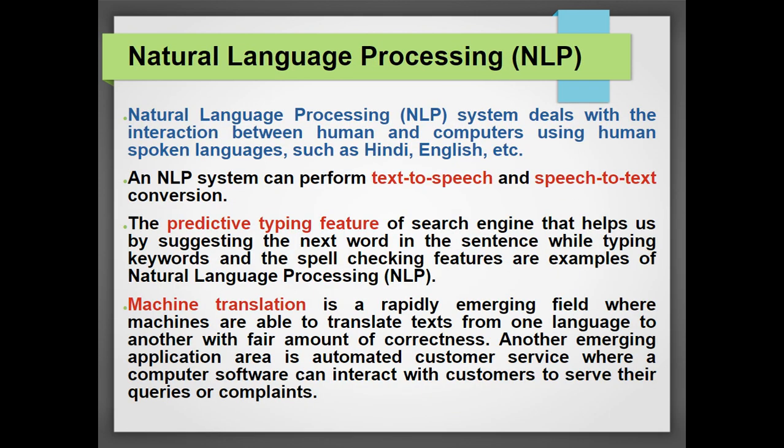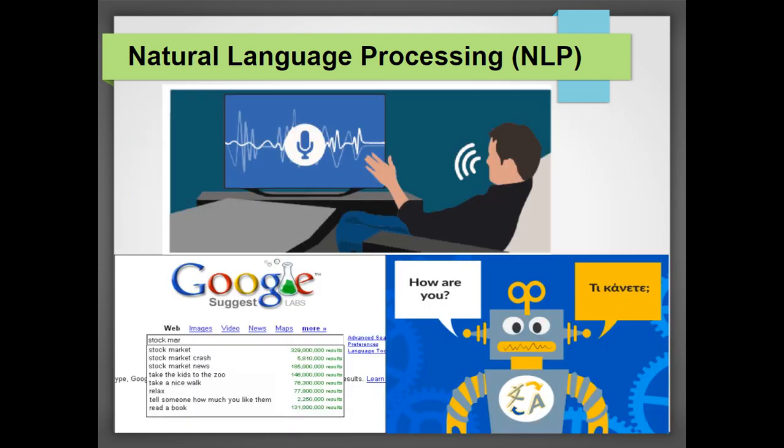Then we understood there is something called natural language processing — a system which deals with the interaction between humans and computers using human spoken languages, that is speech analysis. Text-to-speech and speech-to-text conversion can be done. That is one application of artificial intelligence. A predictive typing feature of a search engine is also artificial intelligence, helping us suggest the next word so we can type without spelling mistakes — like when you type in WhatsApp or Google.